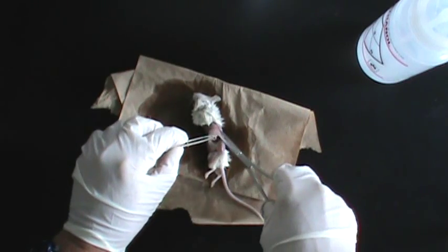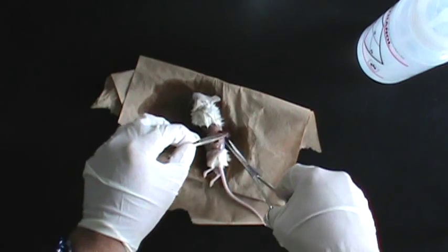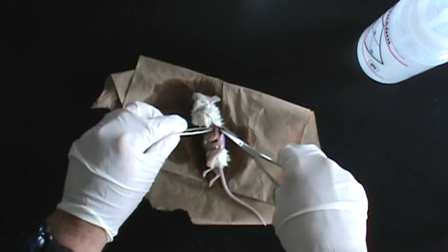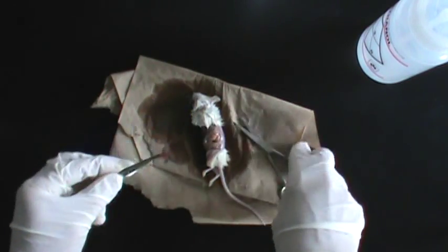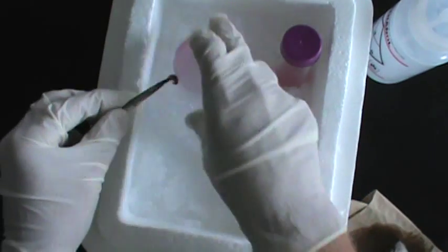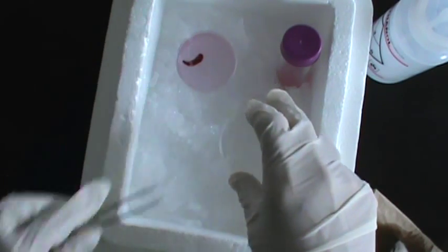Make a small snip in the muscle wall and remove the spleen, trimming off as much of the connective tissue as possible. Then we're done with the mouse at this point in time. Put the spleen into the dish of cold culture medium.